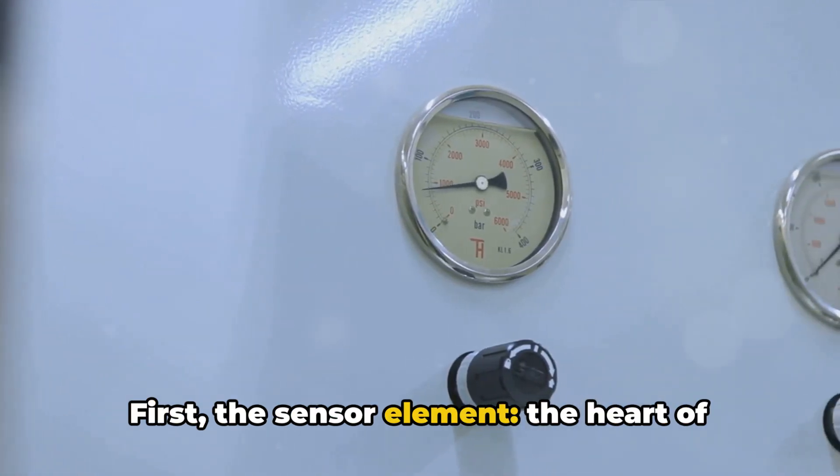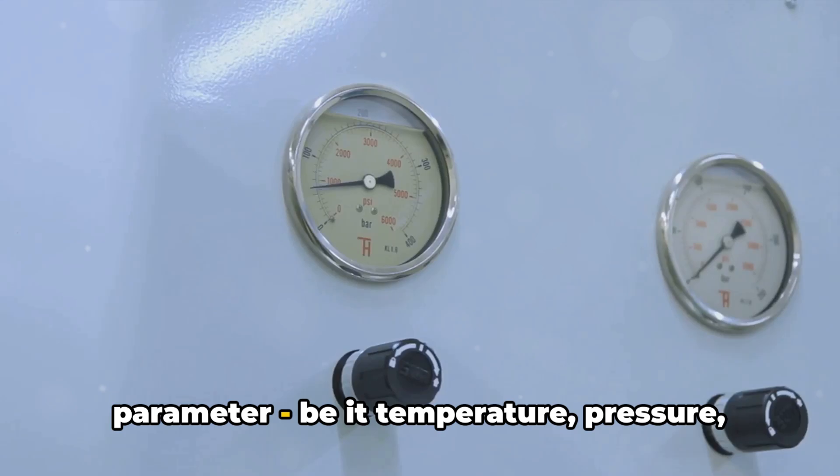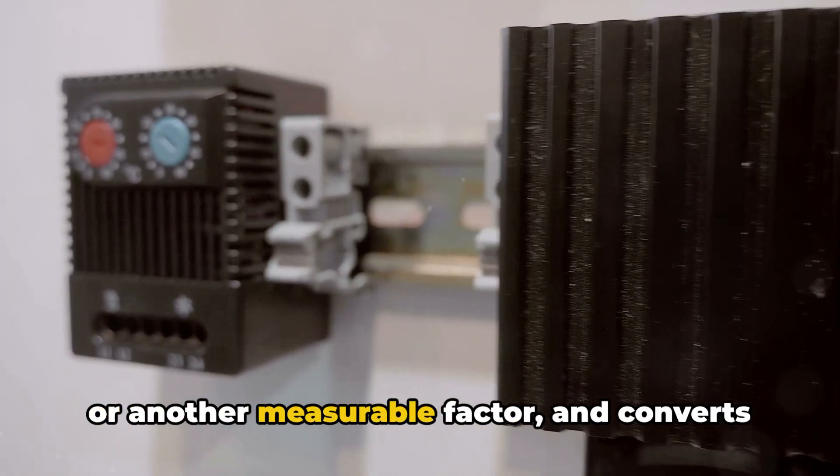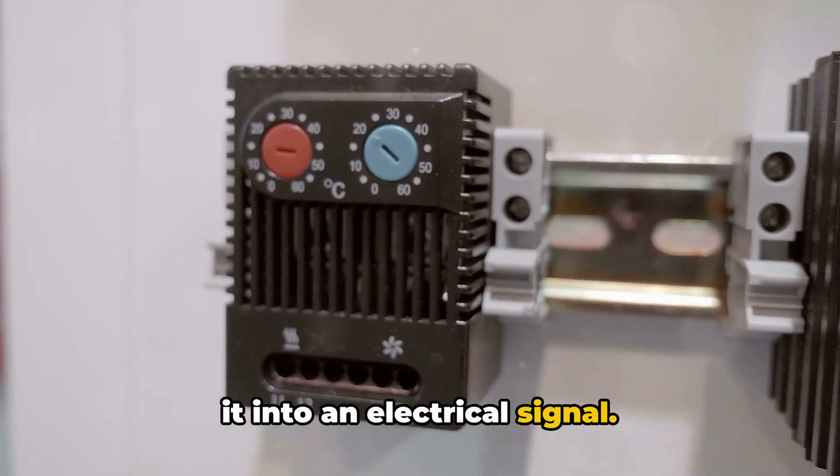First, the sensor element, the heart of the transmitter that detects the physical parameter, be it temperature, pressure, or another measurable factor, and converts it into an electrical signal.